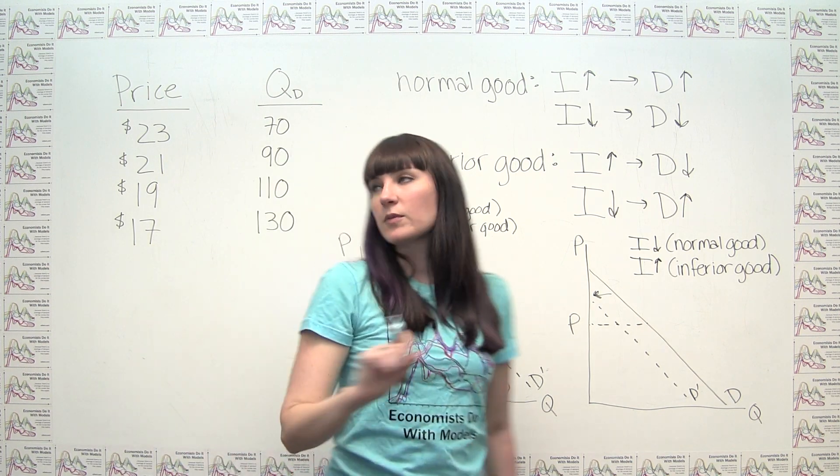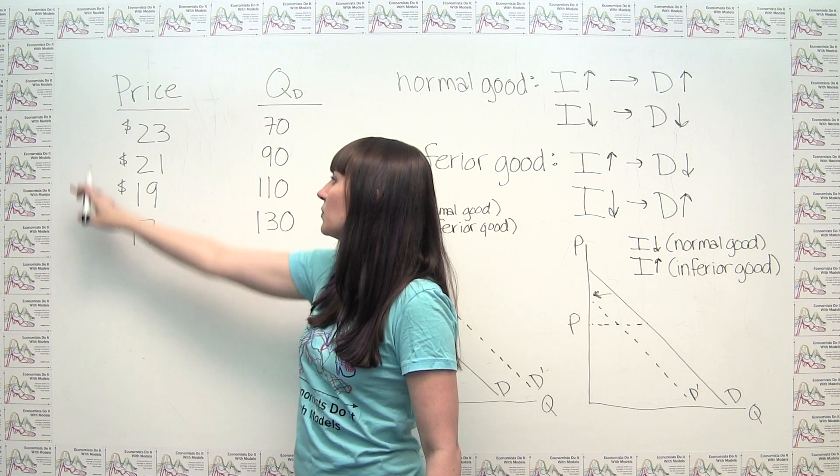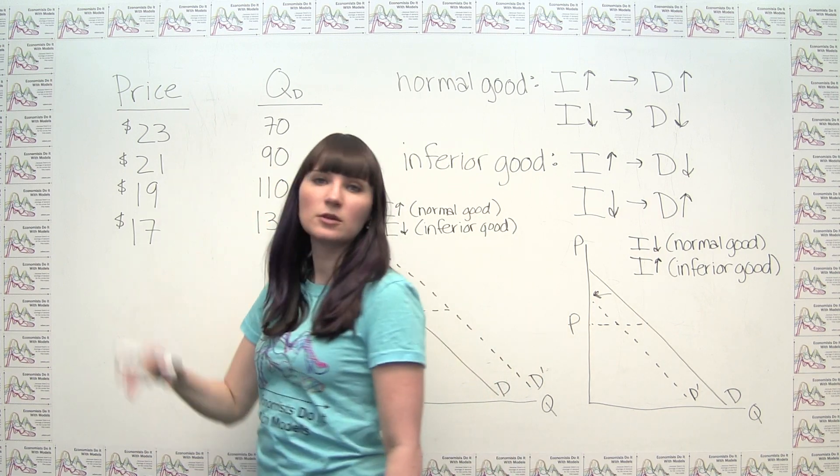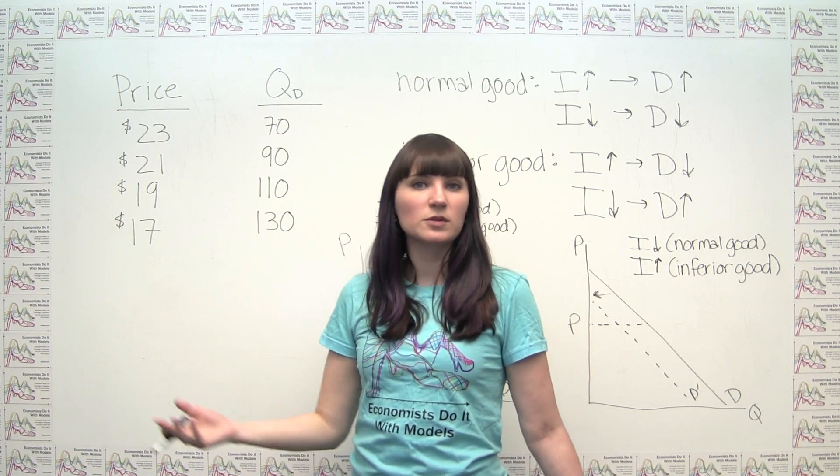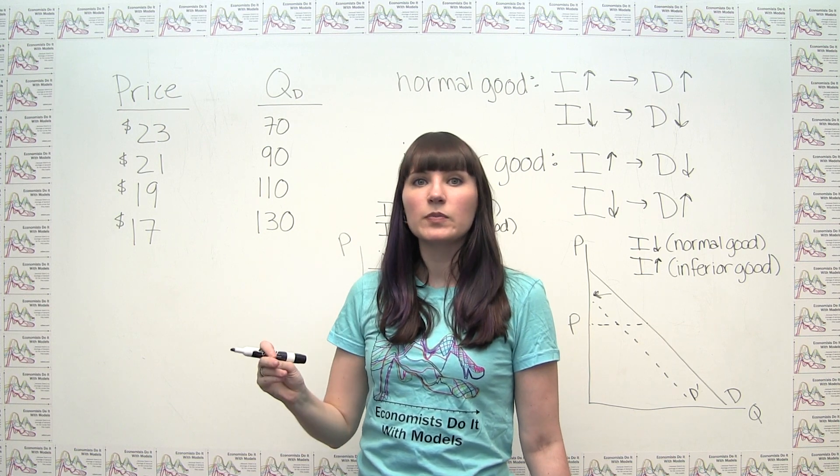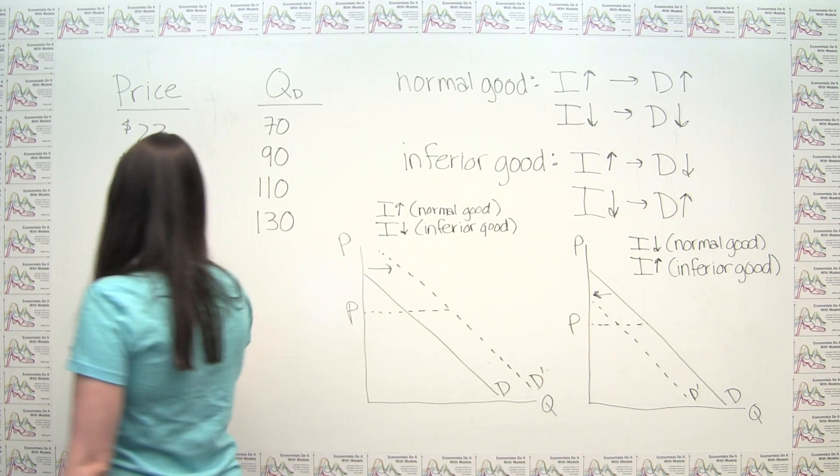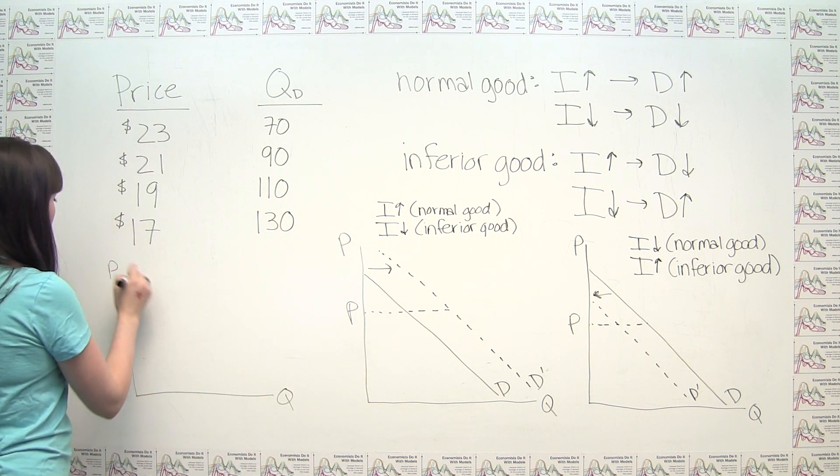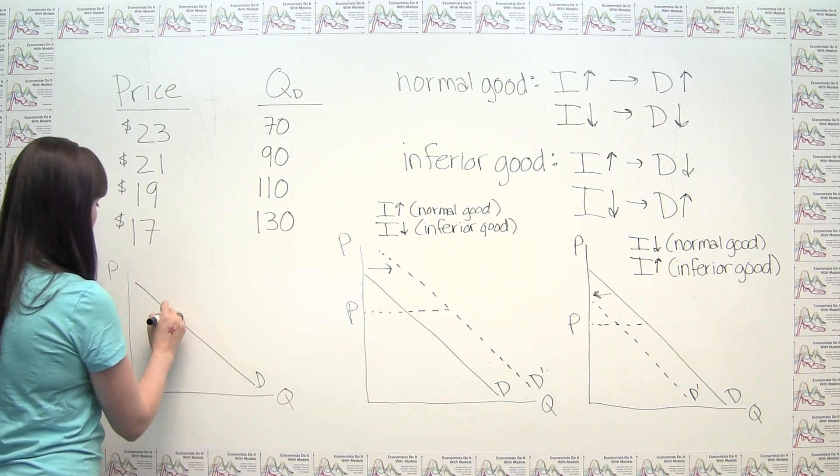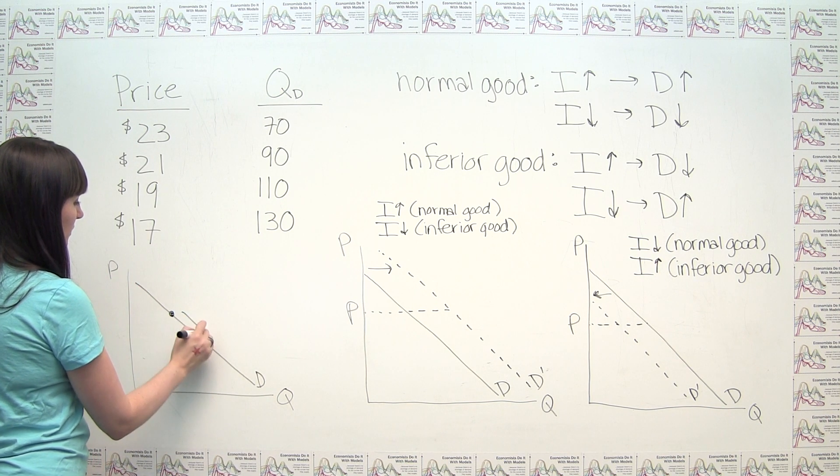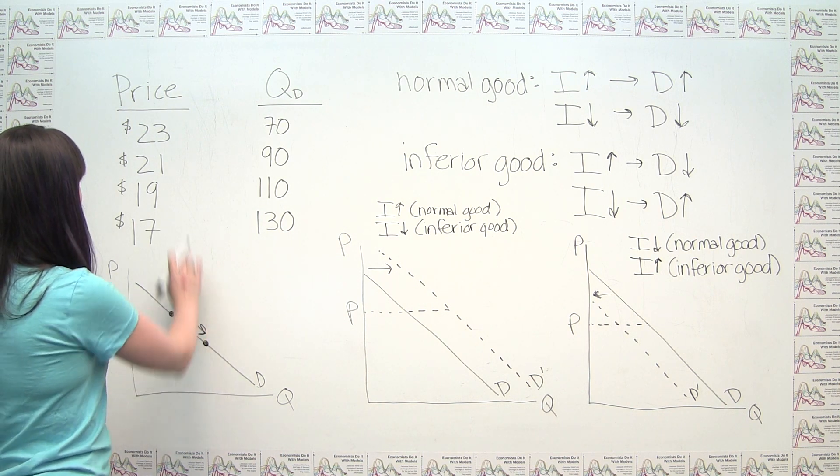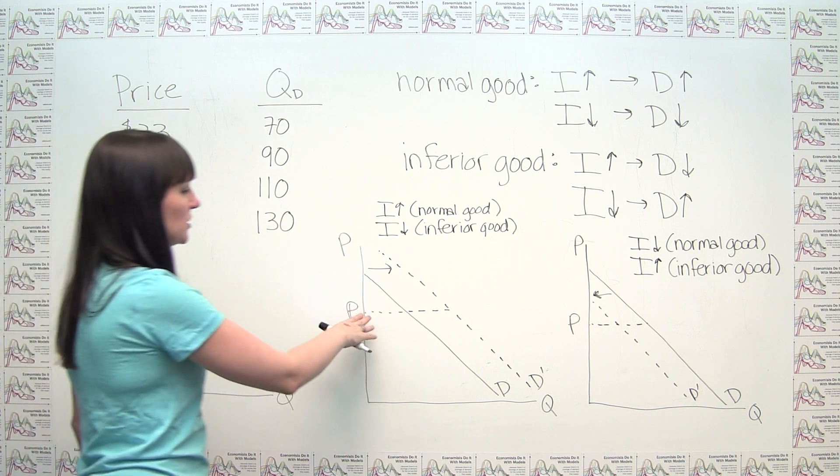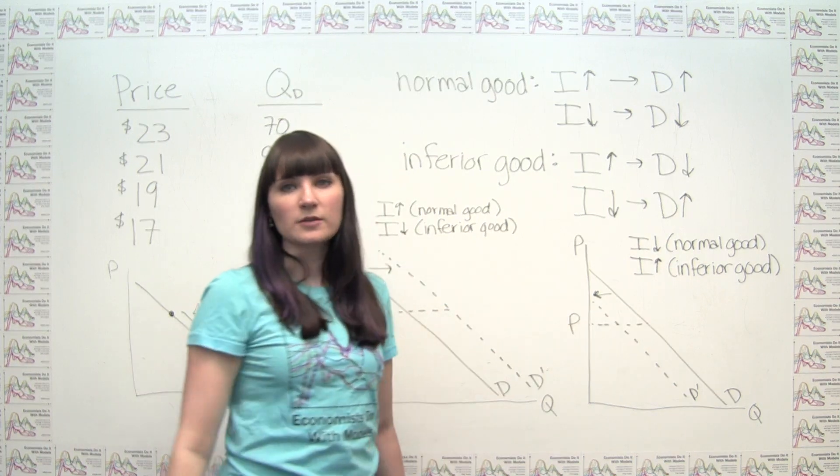Even though one of the components in a lower price is that on some level consumers feel richer, it's not one and the same. And you can see here that if we were to change the price of the goods, we would just be moving from one point to another. For example, if we were to lower the price, we'd just be moving from one point to another on the same demand curve. This is what a change in price would do. Whereas when we're talking about a change in income, we're actually shifting the entire demand curve.